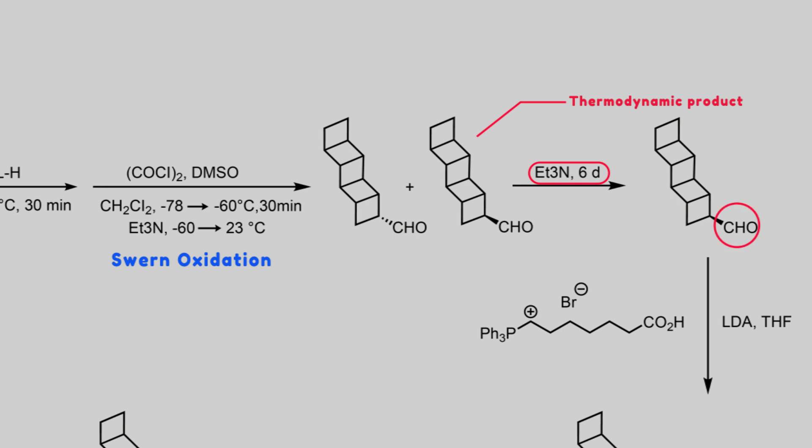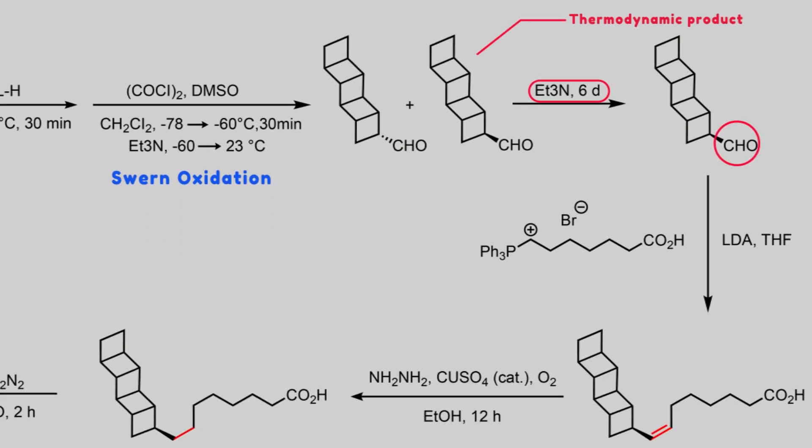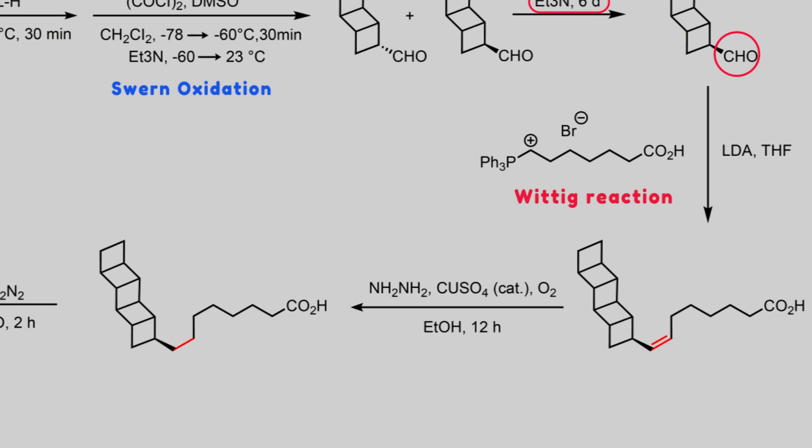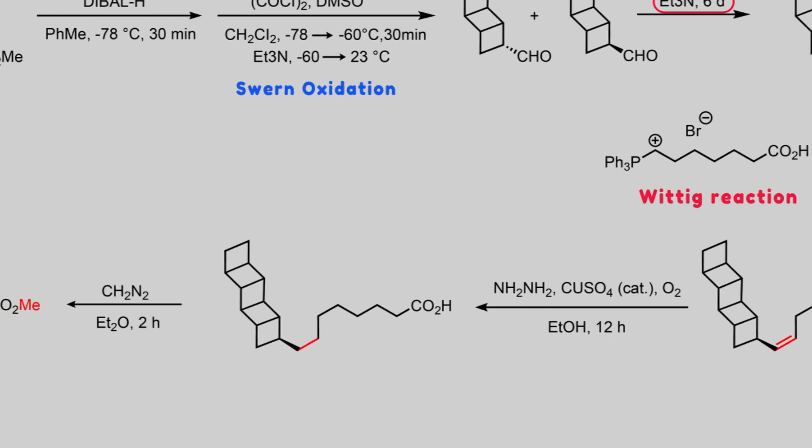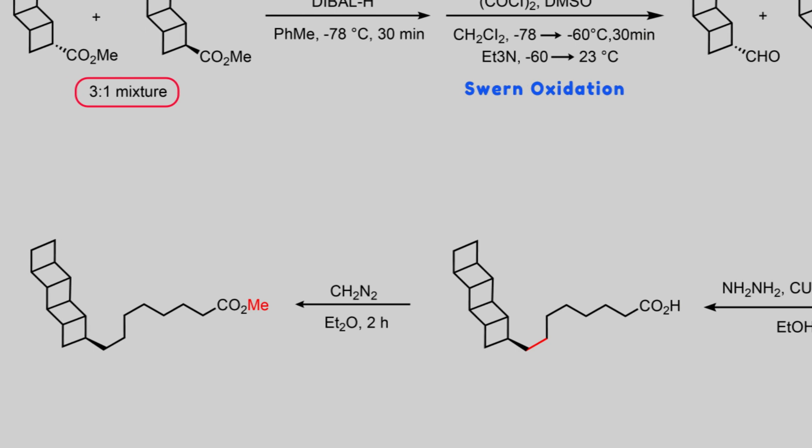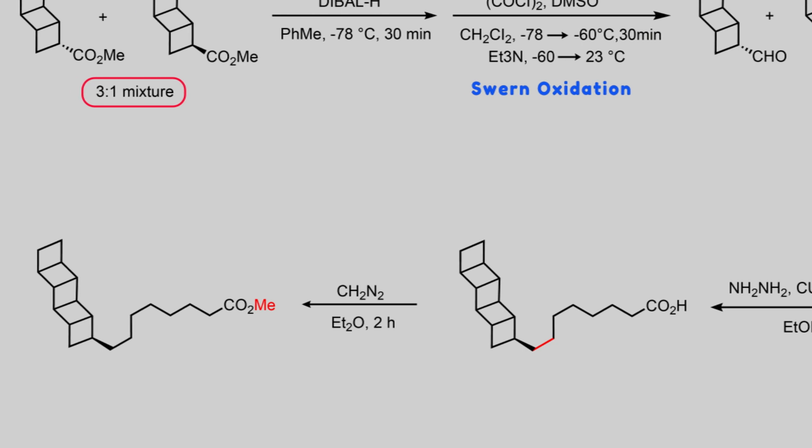In the next step, a linear tail of the target is attached to the molecule via a Wittig reaction with the aldehyde and corresponding phosphonium ylide, which underwent double deprotonation. After that, double bond was reduced by in situ diimide formation, and in the final step, diazomethane promoted conversion of carboxylic acid to the desired target.